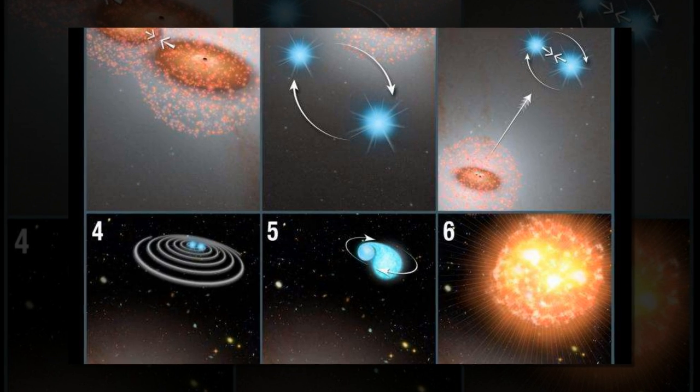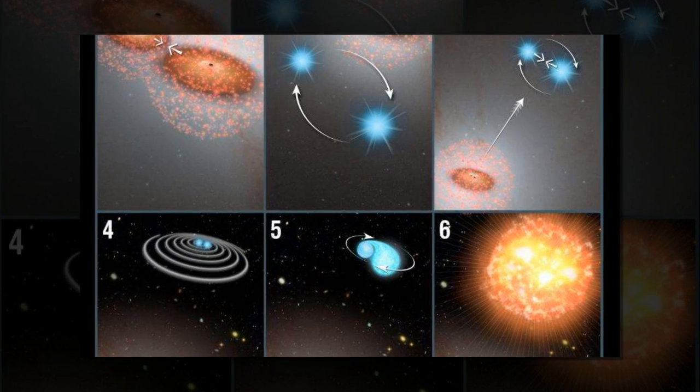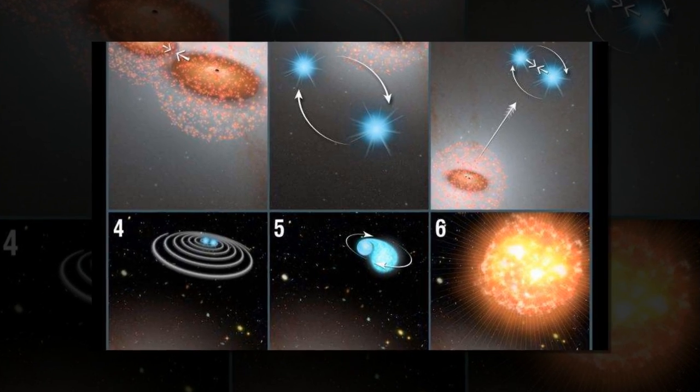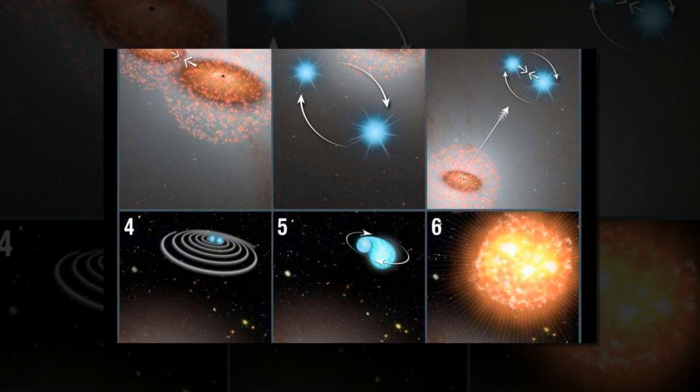Examining the locations and kinematics of the supernovas, he was able to determine that the stars that exploded had been kicked out of their galaxies at very high speeds, millions of years before they exploded.